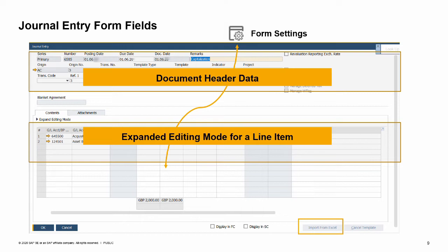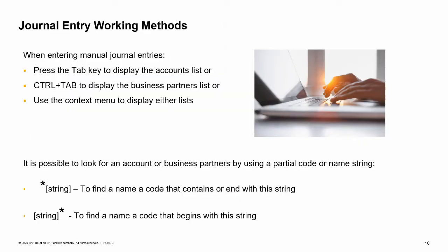Note that you can also import rows of journal entries from Excel by choosing the Import from Excel button. To learn more, please refer to the Import from Excel course. You can enter multiple lines with debit or credit amounts. In every line you add, SAP Business One will recommend a balancing amount which you can update.